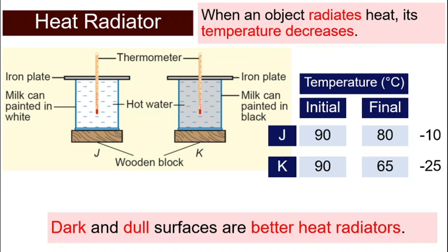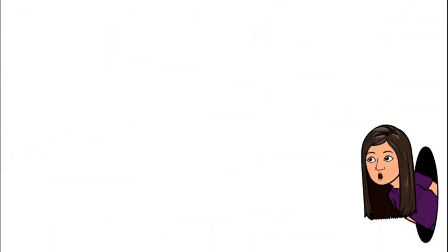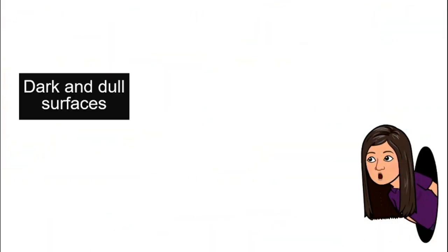So the conclusion is dark and dull surfaces are also better heat radiators. Meaning if you put hot water in two containers, the one that is darker and with dull surface, they will lose the heat easier. They are better heat radiators, they radiate the heat a lot better compared to a white and shiny surface.